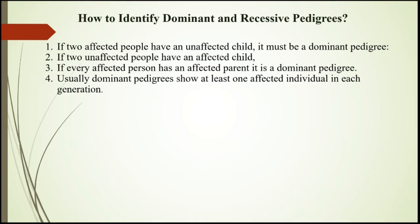How can you identify dominant versus recessive? Here are four rules. One: if two affected people have an affected child, it must be a dominant pedigree — meaning both parents are heterozygous dominant (Dd x Dd) and produce an unaffected child (dd). Two: if two unaffected people have an affected child, meaning parents are unaffected but the child is affected, you can conclude it is a recessive type of pedigree.